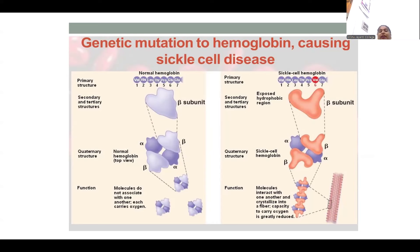In the disease condition, the sixth amino acid is valine. This valine causes changes in the secondary and tertiary structures, exposing the hydrophobic region of the beta subunit. These hydrophobic regions interact with one another, causing the protein to crystallize in the form of fibers, thereby decreasing its capacity to carry oxygen. This ultimately brings about the symptoms of the disease.